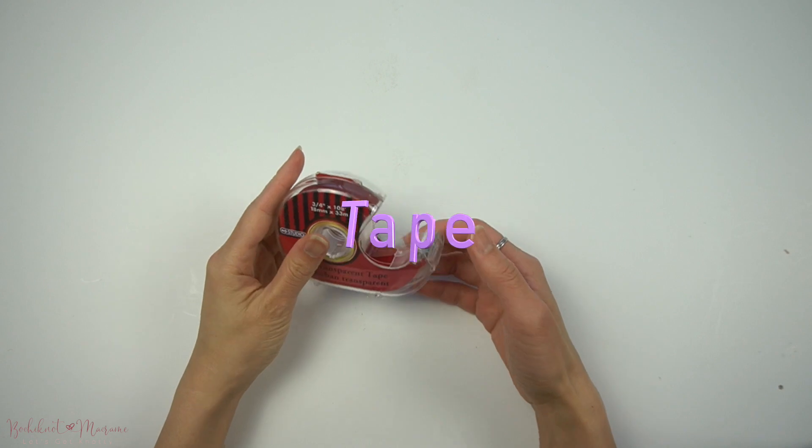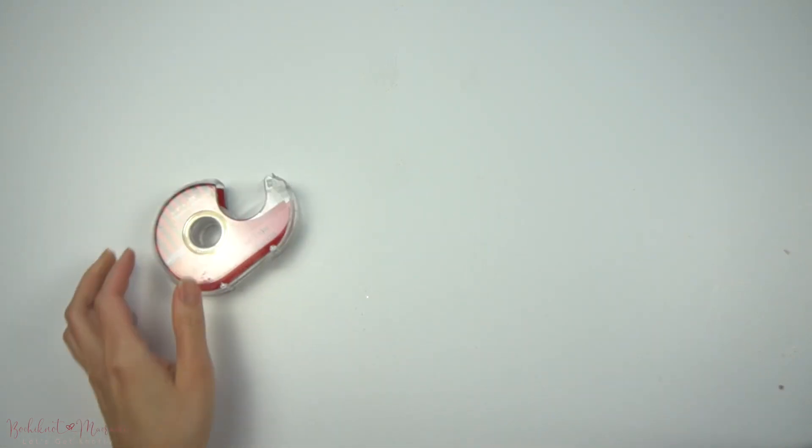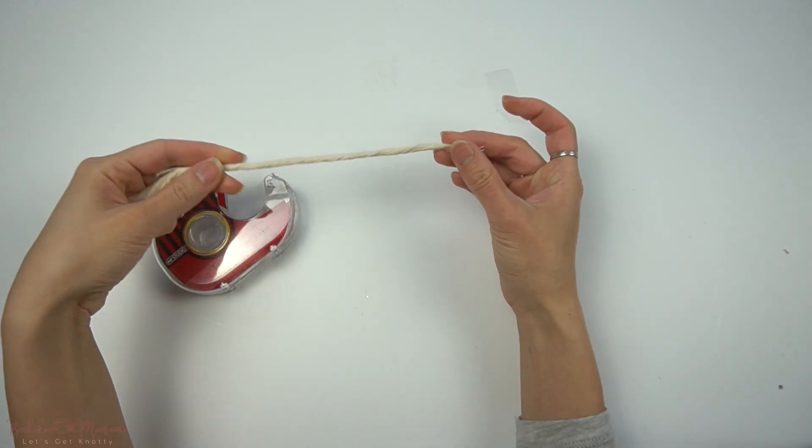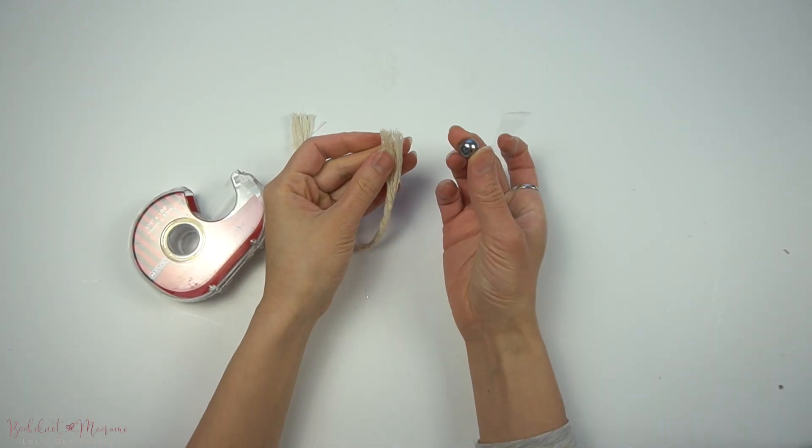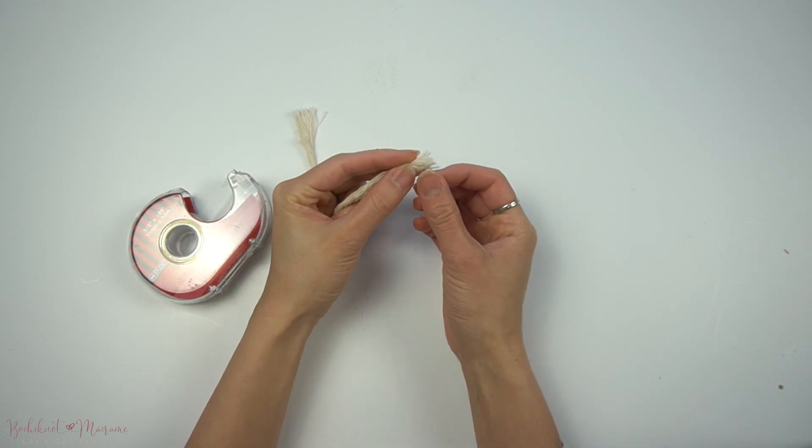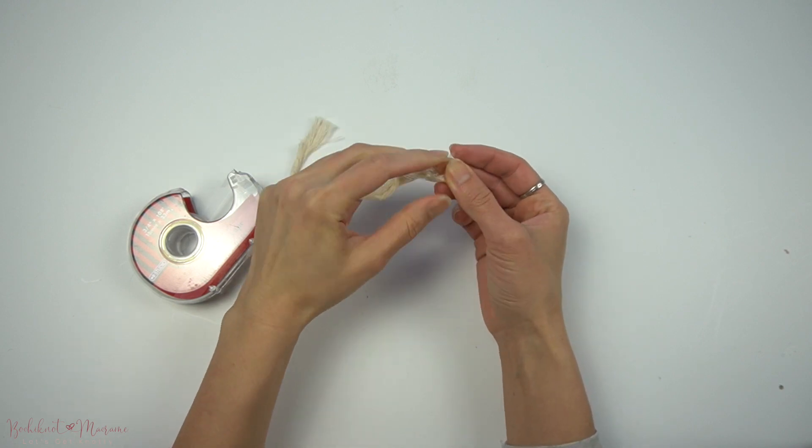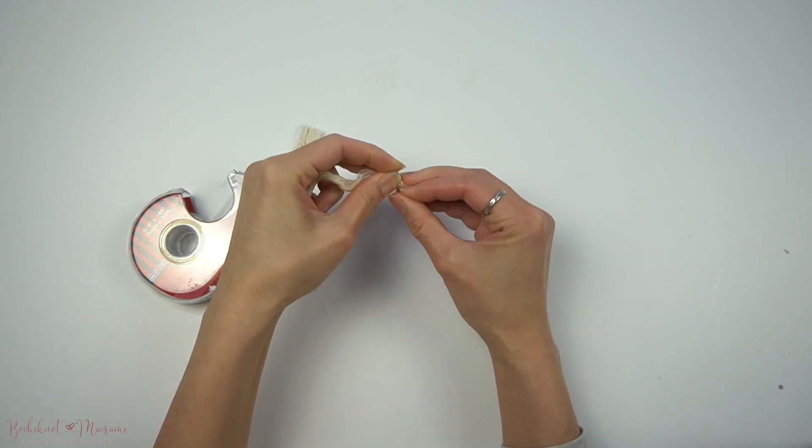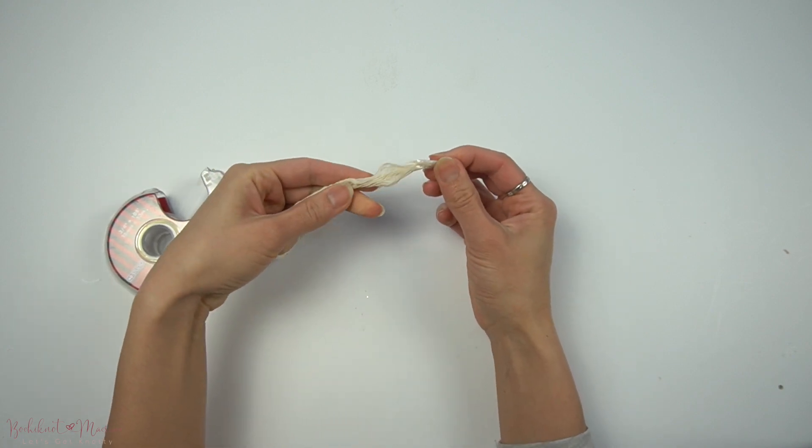A useful tool to have when you're trying to incorporate other accessories such as beads is tape. Oftentimes cord ends are frayed, making it difficult to thread through beads, and so if you take a little bit of tape and wrap the cord ends and then thread through the beads, it makes it that much easier.